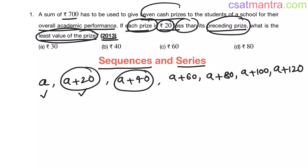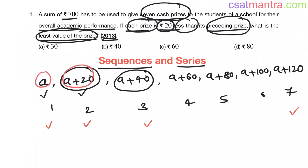There are 7 cash prizes only. If you observe, these cash prizes are in arithmetic progression or arithmetic series. Arithmetic progression means the difference between two consecutive terms is the same. These two are consecutive terms, and these two are consecutive terms as well.